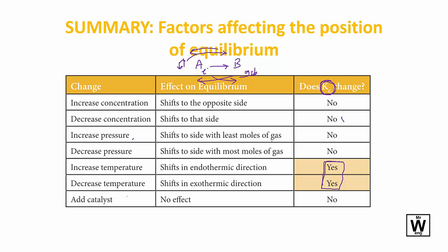For temperature, we write heat as a product — so for an exothermic reaction, increasing heat will shift it back to the reactants. Increasing temperature shifts the equilibrium in the endothermic direction, which is the opposite direction. Decreasing temperature will push it in the exothermic direction.